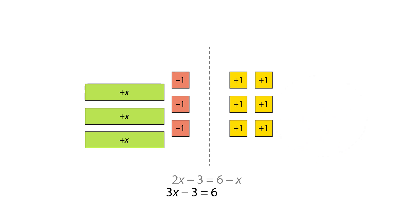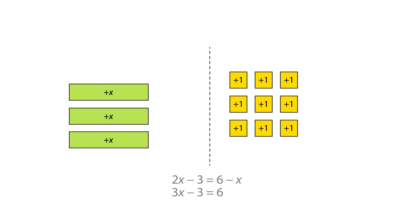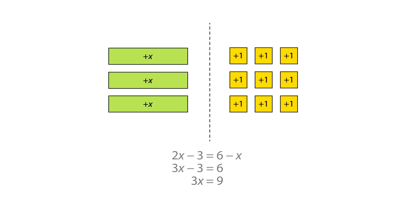We can now write the new equation. Zero pairs can also be created on the left hand side by adding three yellow one tiles to both sides. The zero pairs can be equated to zero and removed. This gives the new equation 3x equals 9. The final step is to arrange the tiles into three equal groups, 3 being the number of x's, showing a solution of x equals 3.